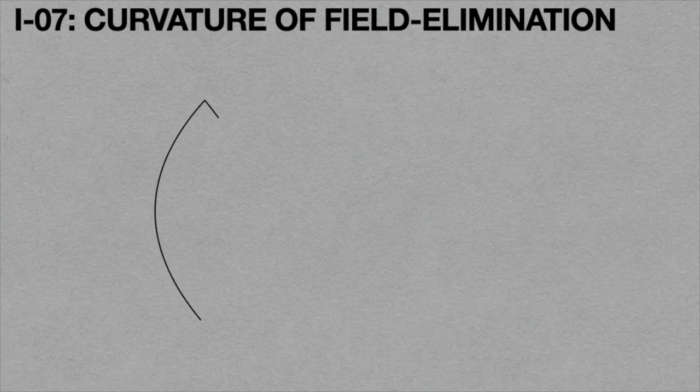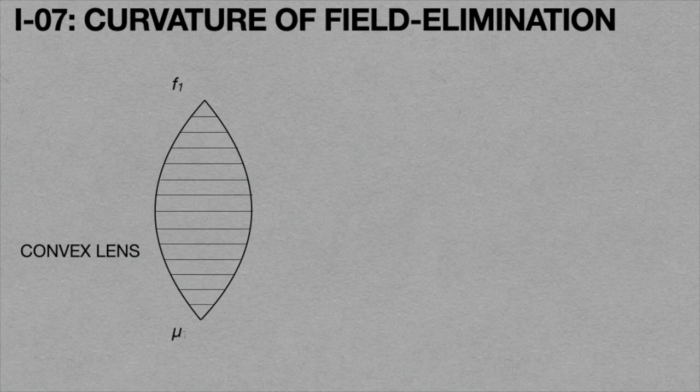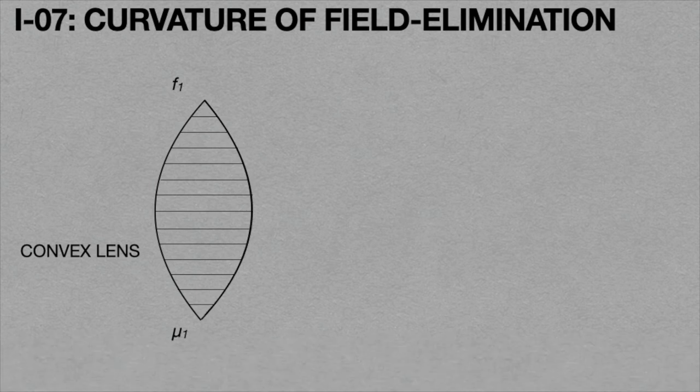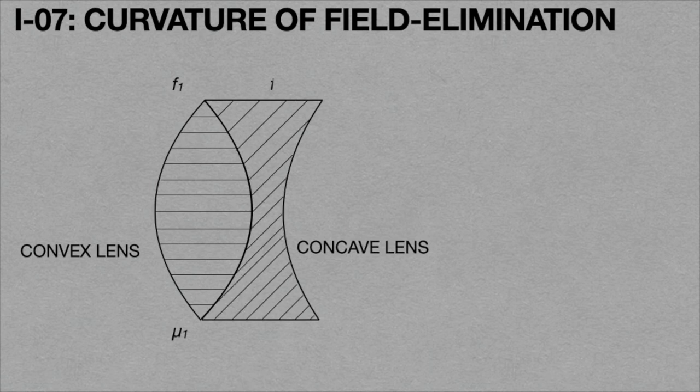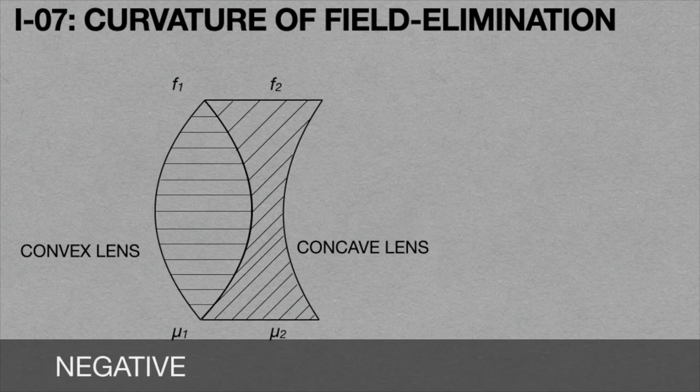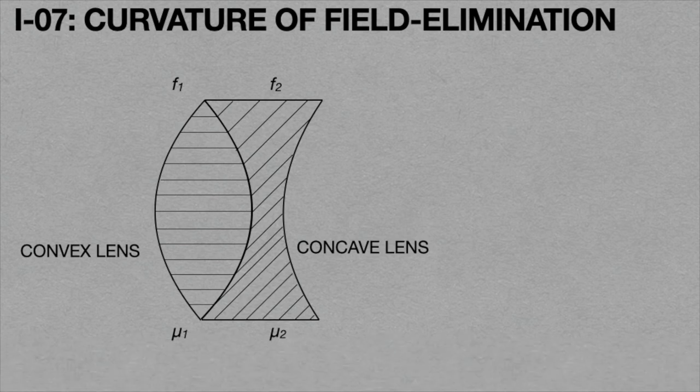Now the second method. Imagine a convex lens having F1 focal length and refractive index mu1. The curvature of field of a convex lens is always positive. Now consider a concave lens having F2 focal length and refractive index mu2. The curvature of field of a concave lens is always negative. That means a suitable combination of different materials of convex and concave lenses can minimize the curvature of field aberration.